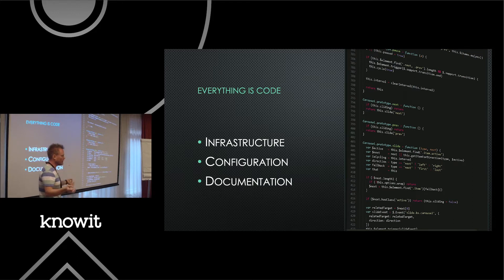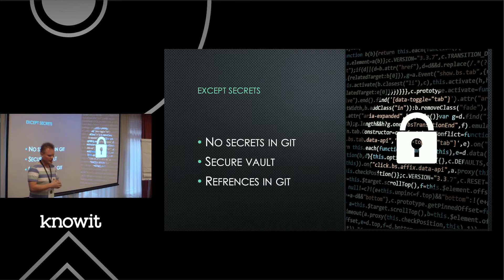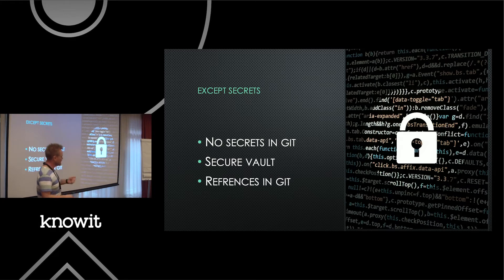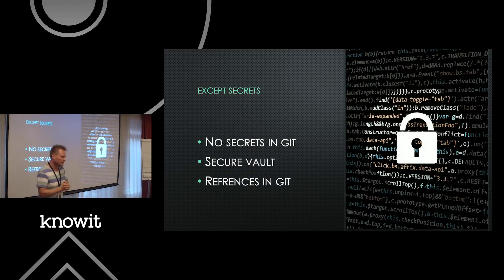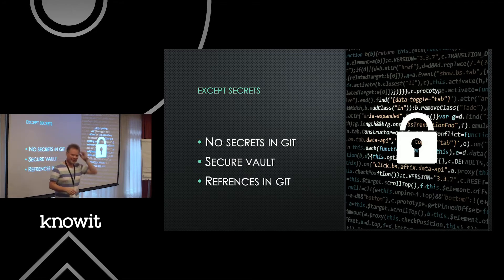So we put everything as code, put everything in Git, and version control it — except for secrets. We don't put secrets in Git. Don't go home and say 'I heard we should put everything in Git' and start checking in your passwords. No. Keep your secrets out of Git. Put them in a secure vault — HashiCorp Vault, AWS Secrets Manager, whatever your favorite tool is — and just put references in Git so you know what password to pull and how to use it. No AWS secret tokens either.